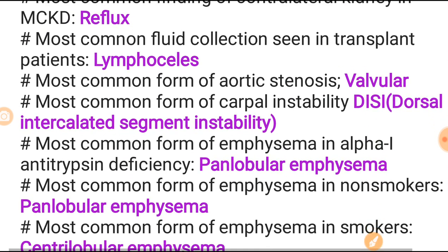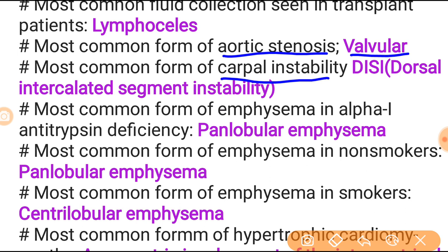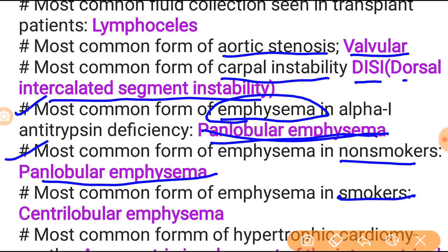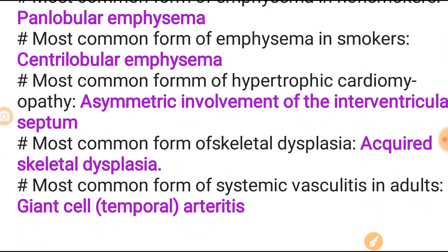Most common fluid collection seen in the transplant patient is lymphocele - not other things. Most common form of aortic stenosis is valvular. Most common form of carpal instability is DISI - dorsal intercalated segment instability. Most common form of emphysema in alpha-1 antitrypsin deficiency is panlobular emphysema. Most common form of emphysema in the non-smoker is panlobular emphysema, while in the smoker it is centrilobular emphysema.